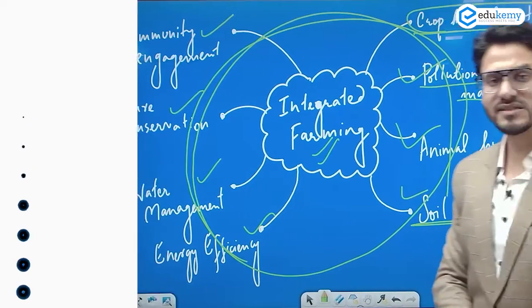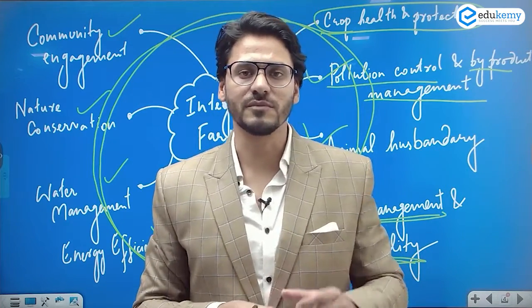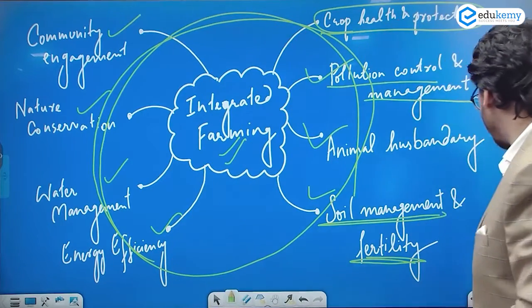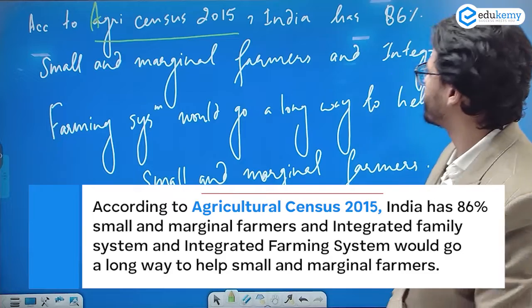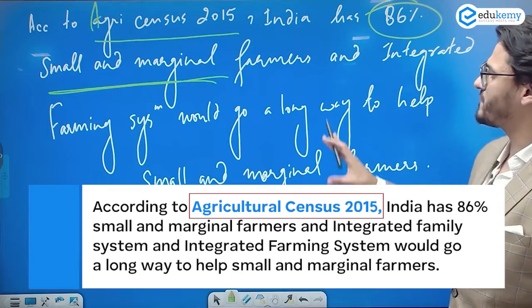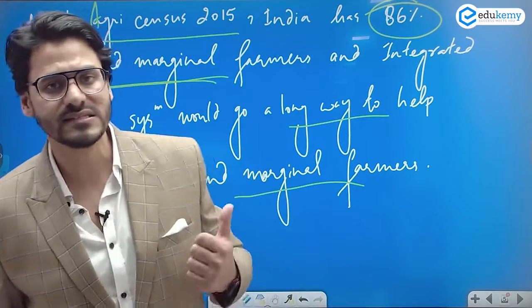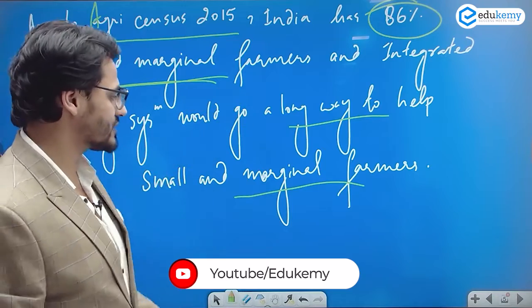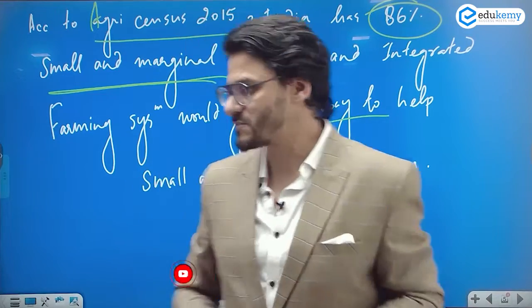Now let's address the second part — how an integrated farming system helps small and marginal farmers with income growth. According to the Agricultural Census of 2015, India has 86 percent small and marginal farmers. So if we can implement an integrated farming system effectively, we can help 86 percent of India's farmers.